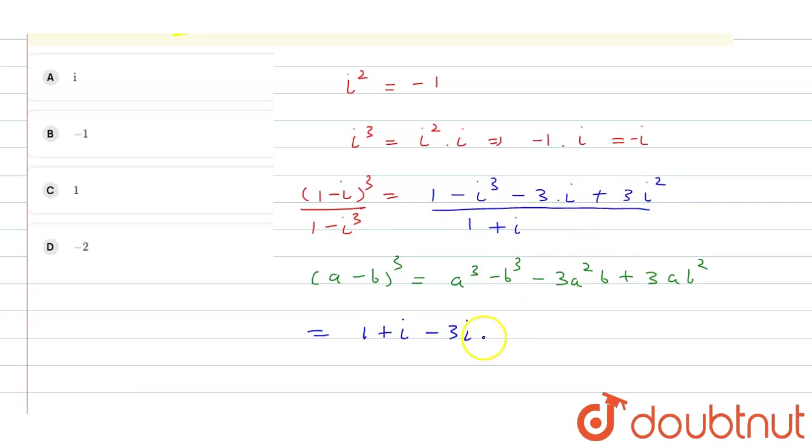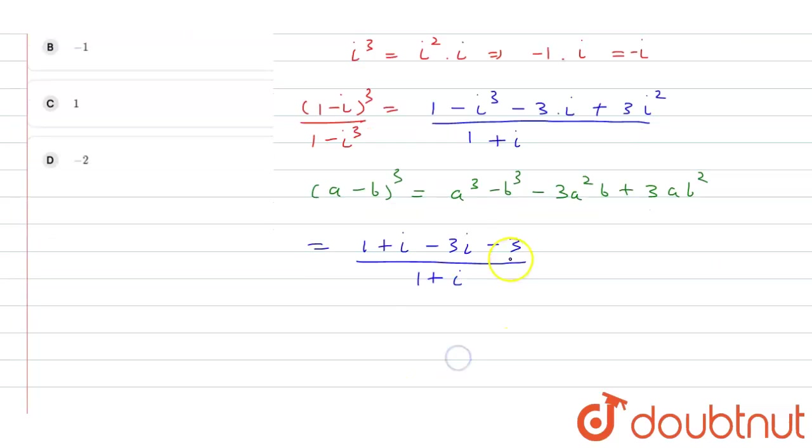So minus 3 divided by 1 plus iota. Now here it is minus 3 plus 1, which means minus 2. Minus 3 iota plus iota is minus 2 iota upon 1 plus iota.